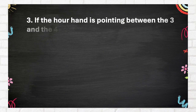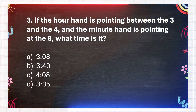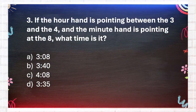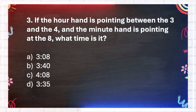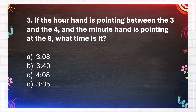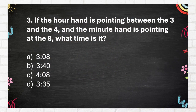Question number 3. If the hour hand is pointing between the 3 and the 4, and the minute hand is pointing at the 8, what time is it? Again, if the hour hand is pointing between the 3 and the 4, and the minute hand is pointing at the 8, what time is it? A. 3:08. B. 3:40. C. 4:08. D. 3:35. The answer is B. 3:40.